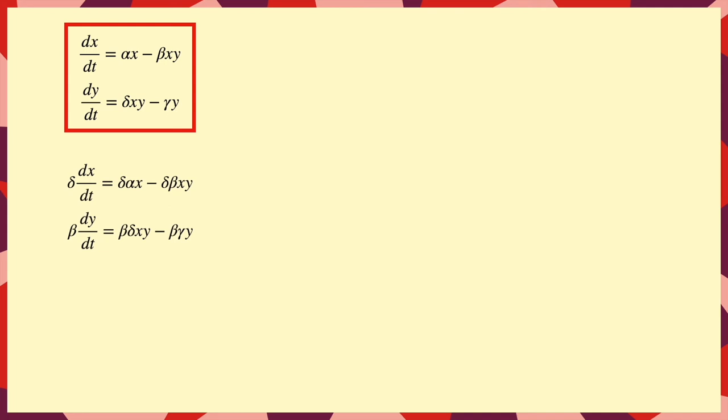Well, to begin with, we can multiply our equations by delta and beta so that the x, y terms cancel out, but then we're left with some linear terms that we can't get rid of.